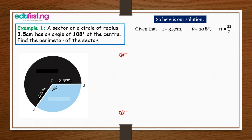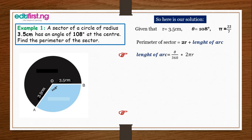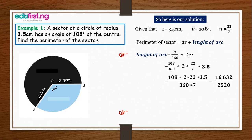Given: r = 3.5, θ = 108°, and π = 22/7. The perimeter of the sector equals 2r plus the length of the arc. First, we find the length of the arc, then add it to 2r. Substituting: length of arc = (108/360) × 2 × (22/7) × 3.5. Working through the multiplication, we get 16,632 over 2,520, which gives a length of arc of 6.6 cm.